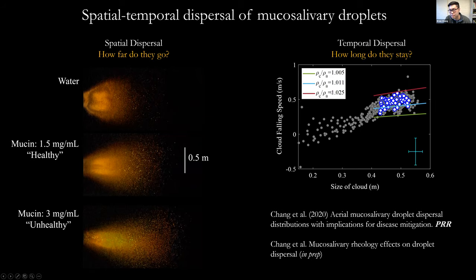We've also been looking at temporal dispersal — in other words, how long droplets stay in the air. By examining the falling speed of a sneeze cloud versus the size of the cloud, we can see clear trends that we can model quite accurately. You can find more information in the paper we published in October 2020.